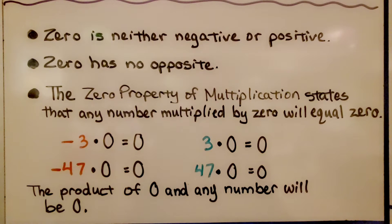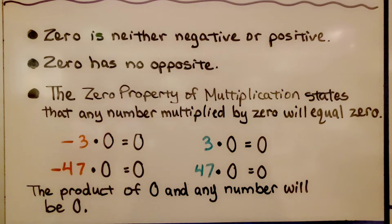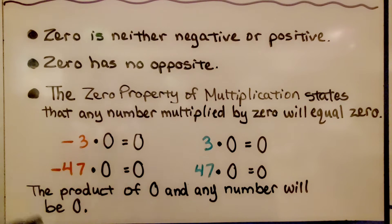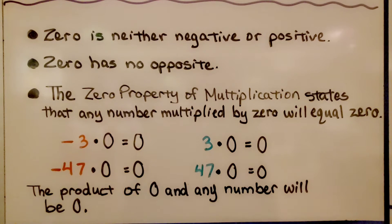Zero is neither negative nor positive, and zero has no opposite. The zero property of multiplication states that any number multiplied by zero will equal zero — the product of zero and any number, regardless of if it's negative or positive, will be zero.